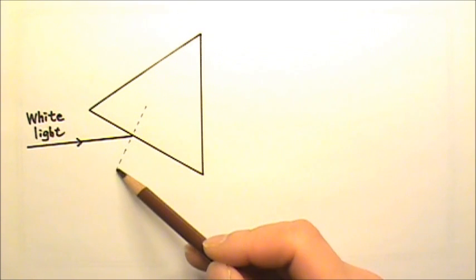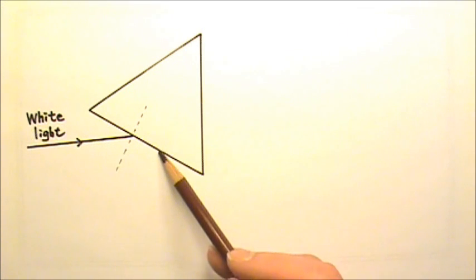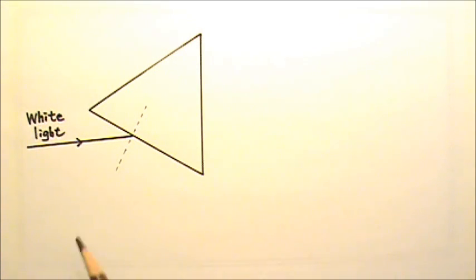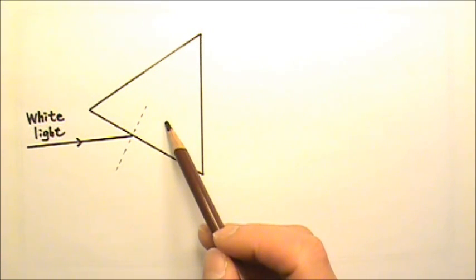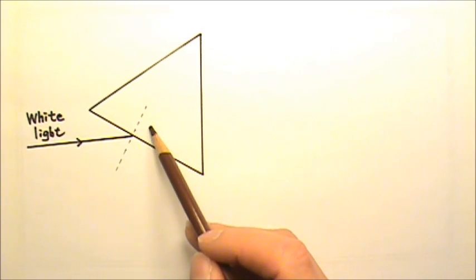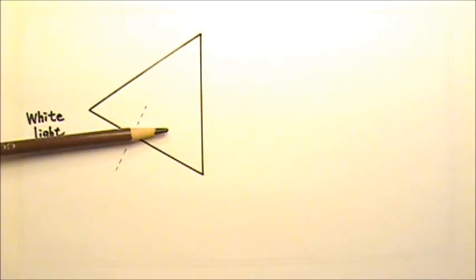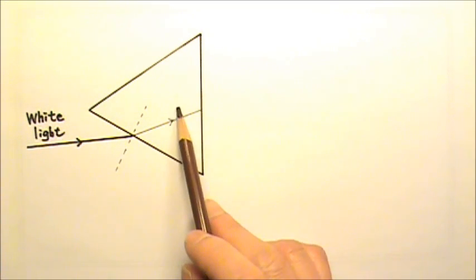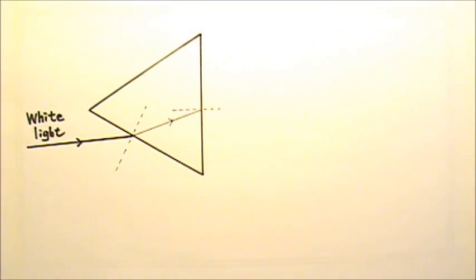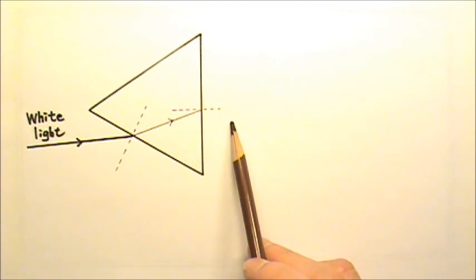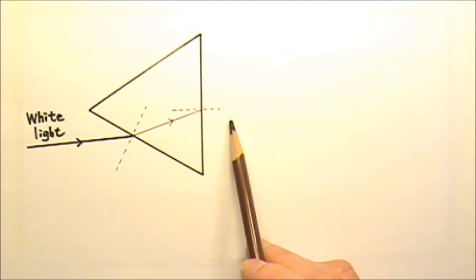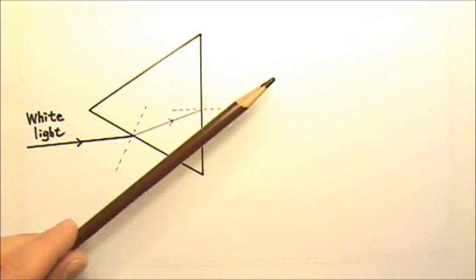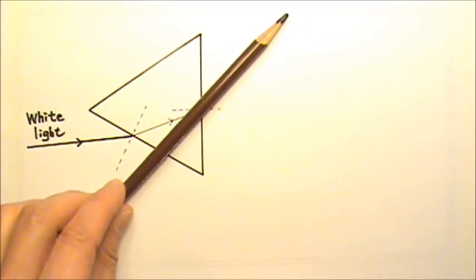This is my normal line for the air-glass interface right here. When light goes from air into glass, it slows down so the angle should get smaller. That means the light ray should bend that way. Then I need another normal line right here. When light goes from glass to air, it speeds up so the angle should get bigger. That means this light ray should bend that way.